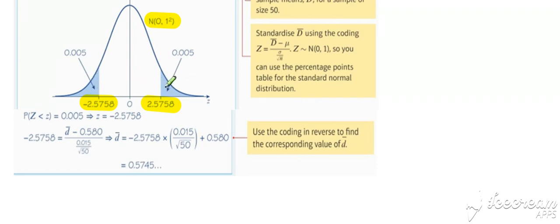What we want to do is we want to work out what the equivalent values of those would be for d-bar. So we use our standardization equation, and we set that equal to each of these critical values in turn.